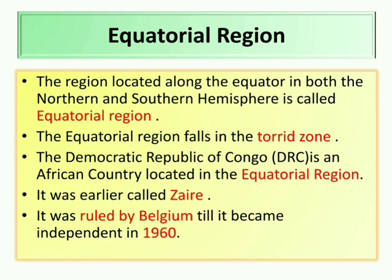The Democratic Republic of Congo was earlier known as Zaire. It was ruled by Belgium until it became independent in 1960.